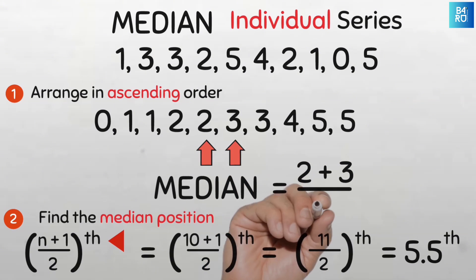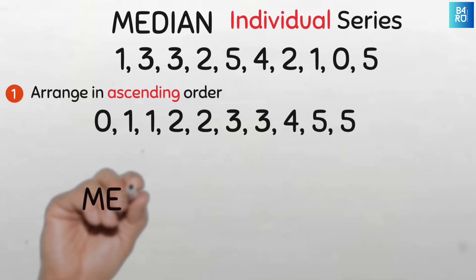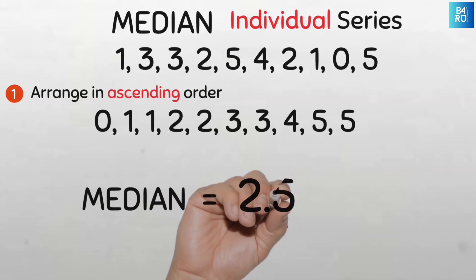The average of 2 and 3 is just 2 plus 3 divided by 2, and that will be 2.5. So our median is 2.5. Easy peasy.